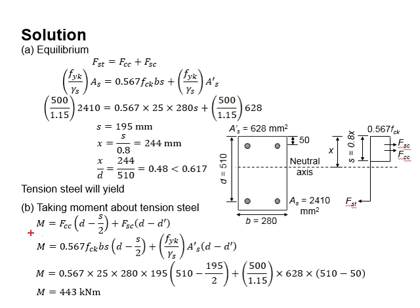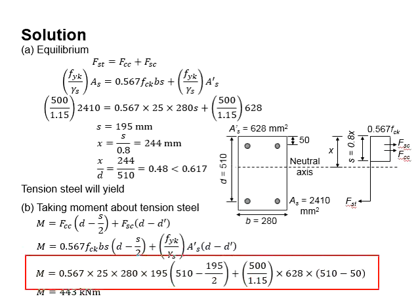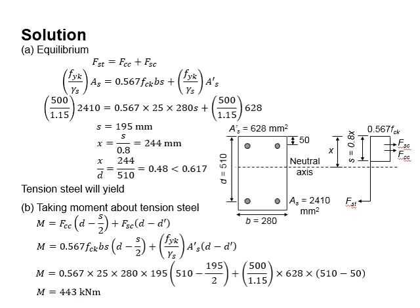With that, the equation to determine the moment of the cross-section is given here. Substitute the relevant values into the equation. You will obtain the moment equals 443 kNm.